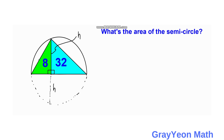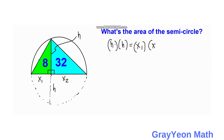We label the base of the 8 square unit triangle as x1 and the base of the 32 square unit triangle as x2. Using the intersecting chords theorem, we can say that h times h equals x1 times x2, so h squared is equal to x1 times x2.